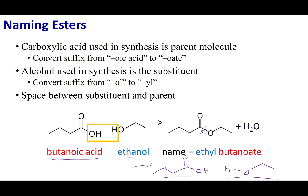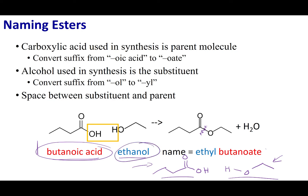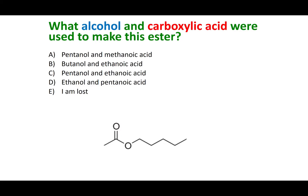Look at the acid it was created from. Take the acid's name, remove the '-oic acid' ending, and replace it with '-oate' — that becomes the parent name. In this example, we had butanoic acid, so the parent becomes butanoate. The alcohol is considered the substituent: drop the '-ol' from the alcohol's name and replace it with '-yl', placing that in front of the parent name. The name of this compound is ethyl butanoate because it's made from butanoic acid and ethanol. Make sure you put a space between the substituent and the parent.